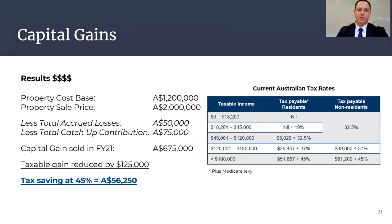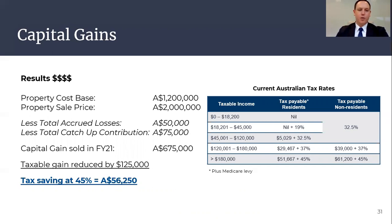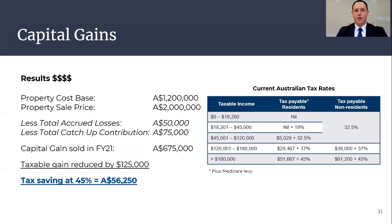As you can see here, through a strategy of maximising both carry forward losses and additionally triggering or applying the eligible catch-up concessional contributions, you may potentially decrease your capital gains tax significantly at the sale of the property. From combining the strategies of utilising carry forward losses of $50,000 plus making an eligible catch-up contribution totalling $75,000, the investor has saved over $56,000.